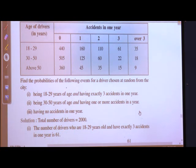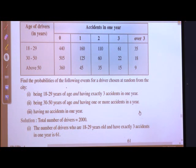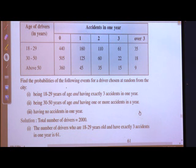The questions are: find the probabilities of the following events for a driver chosen at random from the city. First: being 18 to 29 years of age and having exactly 3 accidents in 1 year. Second: being 30 to 50 years of age and having 1 or more accidents in a year. Third: having no accidents in 1 year.